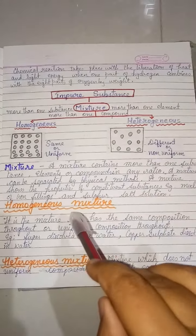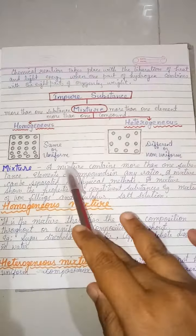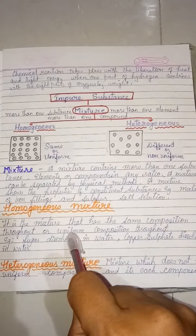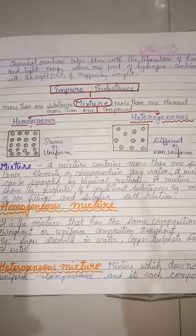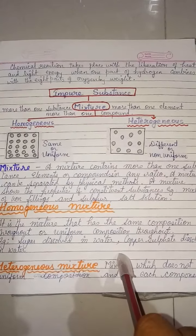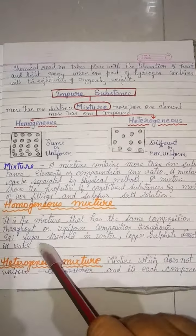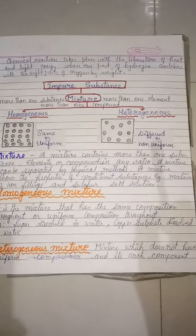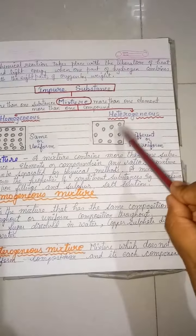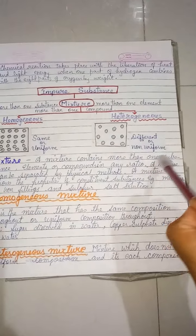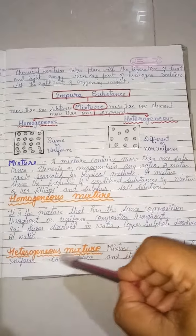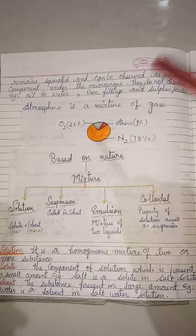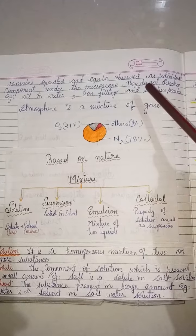A homogeneous mixture has the same composition throughout — it has a uniform composition. Examples include sugar dissolved in water and copper sulfate dissolved in water. A heterogeneous mixture has a different or non-uniform composition — its components remain separated.